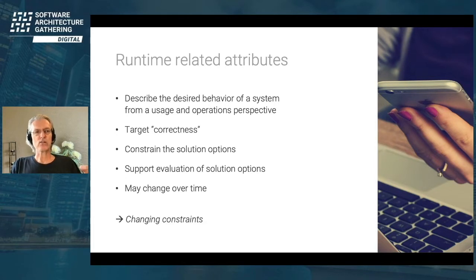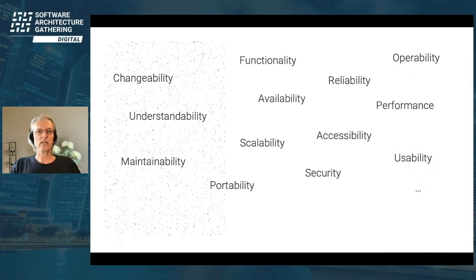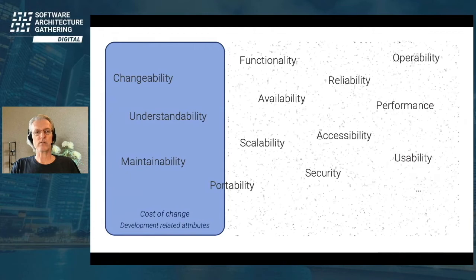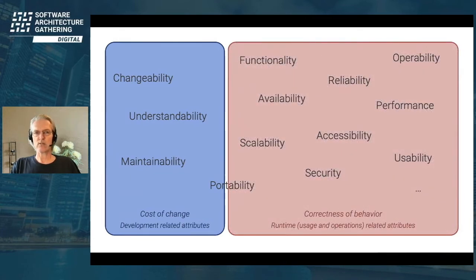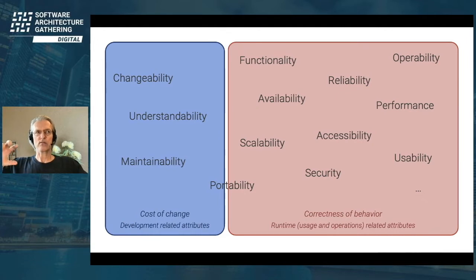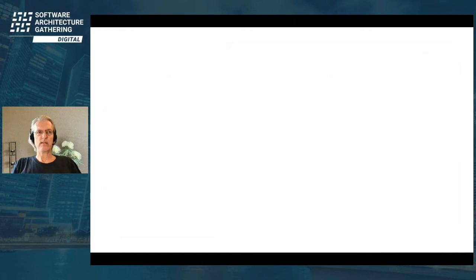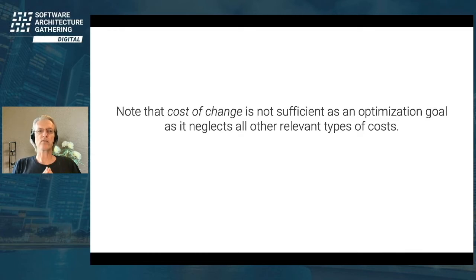Going back to the image: on one side we have development-related attributes, on the other runtime-related attributes. The separation is: optimize cost of change while not violating runtime-related quality attributes. But there's one thing missing — cost of change is not sufficient as an optimization goal because it neglects all other types of costs that might be relevant.